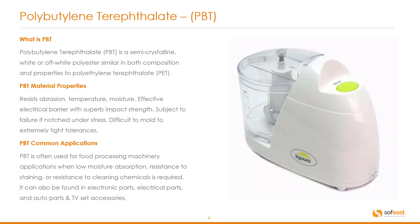Let's have a look at PBT. PBT is a semi-crystalline white or off-white polyester, similar in both composition and properties to PET. It resists abrasion, temperature and moisture, acts as an effective electrical barrier and has superb impact strength, though it is subject to failure if notched under stress and can be difficult to mold to extremely tight tolerances. PBT is often used in food processing machinery where low moisture absorption, resistance to staining or resistance to cleaning chemicals is required. It can also be found in electronic parts, electrical parts, auto parts and TV set accessories. On the right we have a typical food processor.